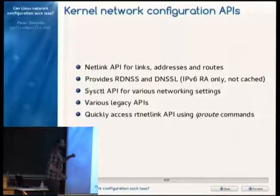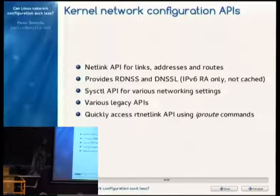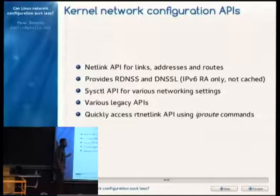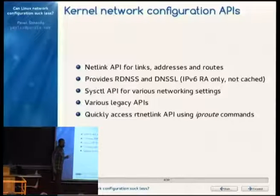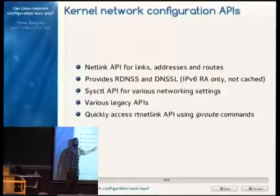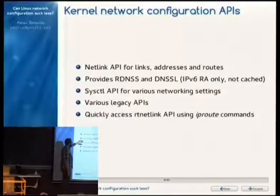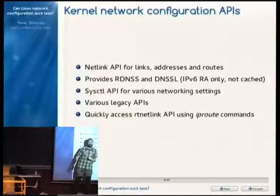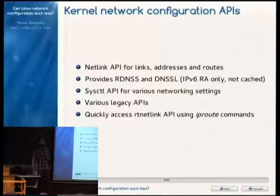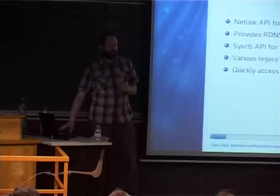The kernel allows you to use the netlink API, which you can use from C programs via the libnl library. You can tell the kernel to configure addresses, link options, and routes. Some things are done via sysctl or proc files instead. The kernel also provides a recursive DNS server list and DNS search list — these are usually put into /etc/resolv.conf.